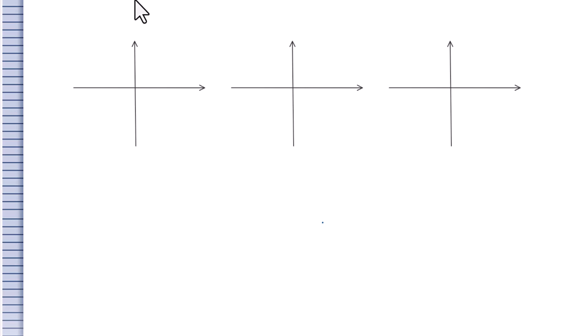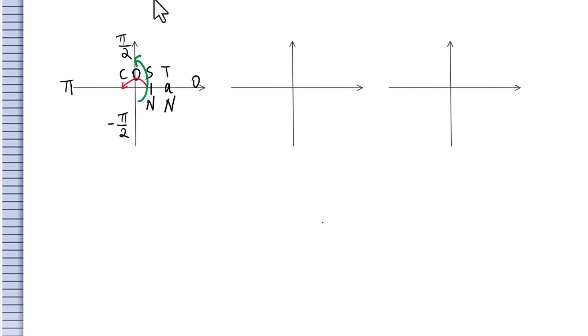This video is about evaluating inverse trig functions. For this coordinate plane, let's label negative pi over 2, 0, pi over 2, pi for cosine, sine, and tangent. The range of inverse cosine is between 0 and pi. The range of inverse sine and tangent is between negative pi over 2 and pi over 2.